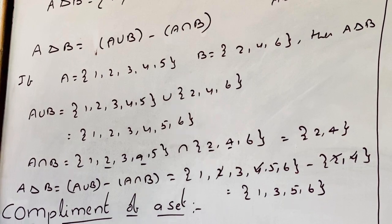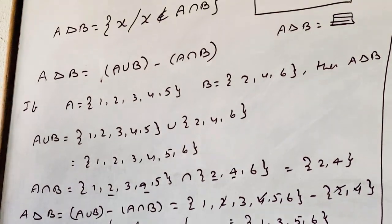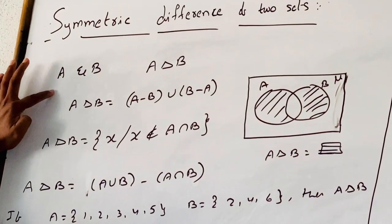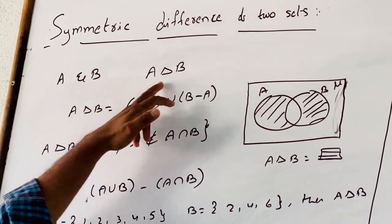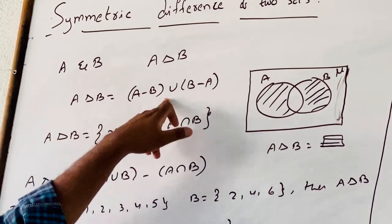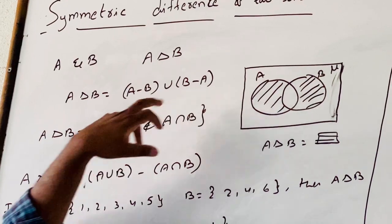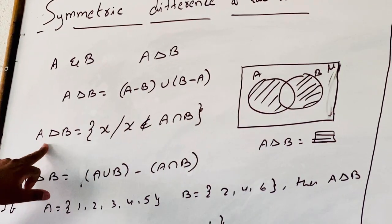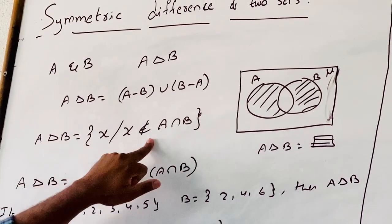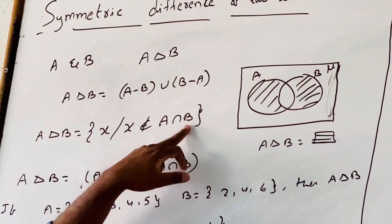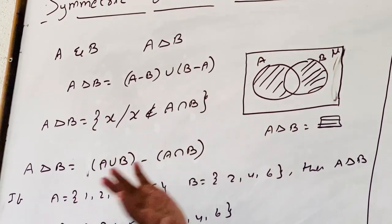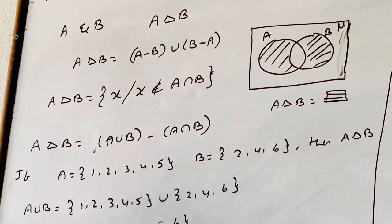Look and observe: the symmetric difference of two sets A and B is denoted by A delta B. A delta B is equal to A minus B union B minus A. The set builder form is: A delta B equals {H such that H does not belong to A intersection B}.